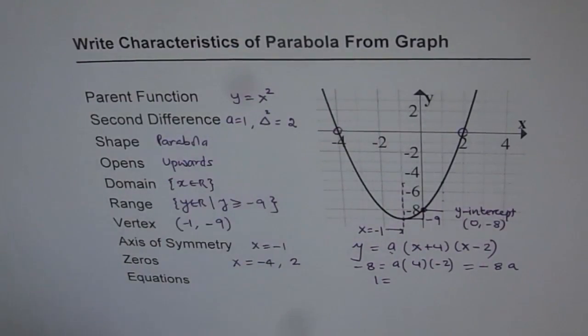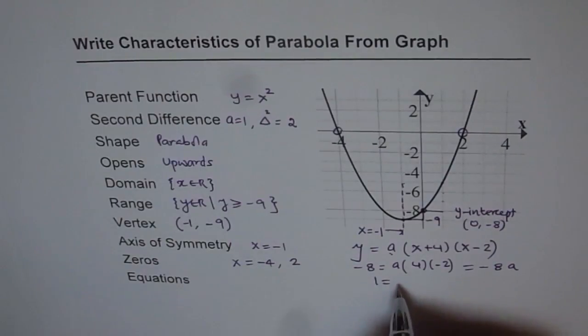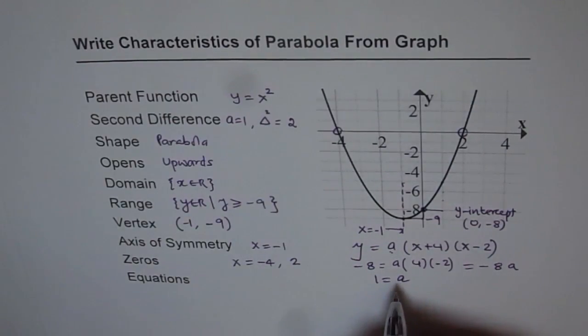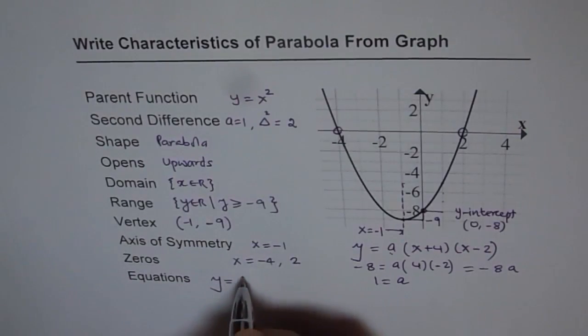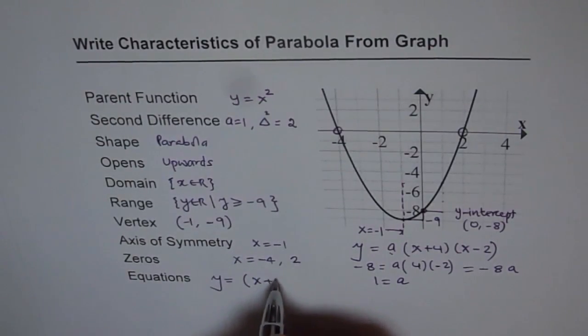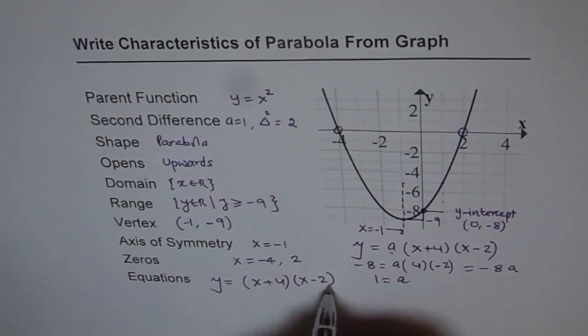So it was an educated guess. So a is 1 and therefore, we get our equation. The equation for the given parabola is y equals to (x plus 4) times (x minus 2).